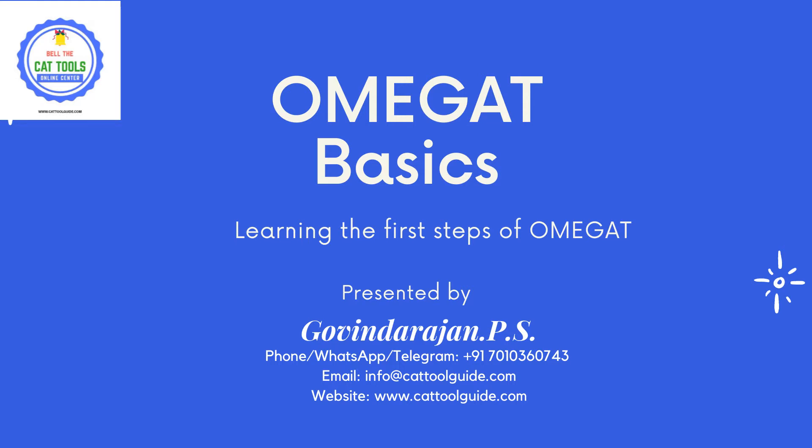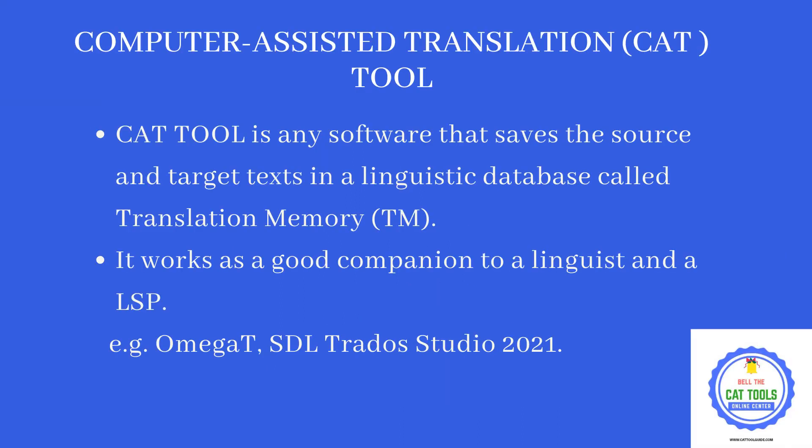Hello everyone, let us learn the basics of OmegaT. OmegaT is the only free CAT tool available for translators. A CAT tool is any software that helps a translator by saving the source and target text in a linguistic database or translation database, which is called translation memory.